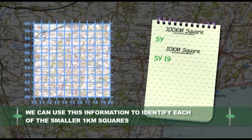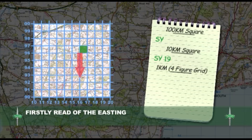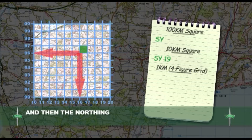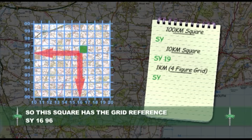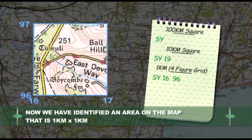Now, we can use this information to identify each of the smaller 1km squares. We use the same method as before — read off the Easting, in this case 16, and then the Northing, 96. We are left with a grid reference of SY1696. We have identified an area on the map that is 1km by 1km, giving us a 4-figure grid reference.